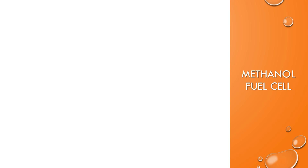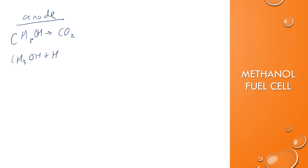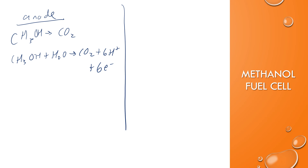Let's look at the half reactions for the methanol fuel cell, starting at the anode. The methanol itself needs to be oxidized and will form carbon dioxide. Carbons are already balanced; to balance oxygens, add water; to balance hydrogens, add six hydrogen ions; and six electrons are needed to cancel the charge. That is the half reaction at the anode — no further modification needed because it is in acidic conditions.